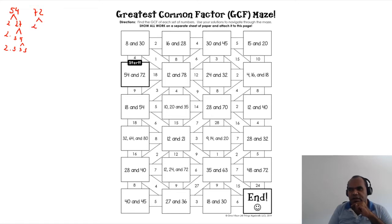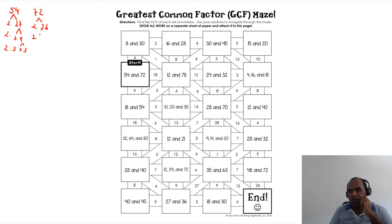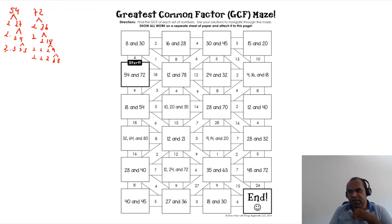Now let's break down 72. Two times 36 equals 72. Breaking down 36: two times 18. Breaking down 18: two times nine. Breaking down nine: three times three. So 72 breaks down to 2, 2, 2, 3, 3.